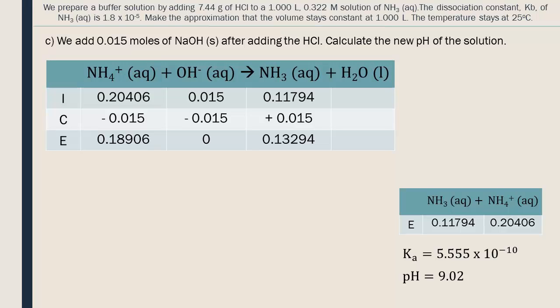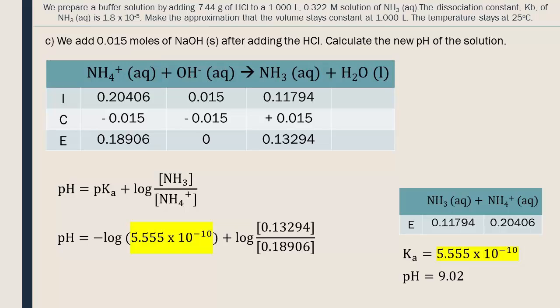Finally, to calculate the pH, we have to use the Henderson-Hasselbalch equation. We insert our new concentration values for NH3 and NH4+. The pKa does not change. Rounding to two significant digits, the pH of our buffer solution after adding the base is 9.10.